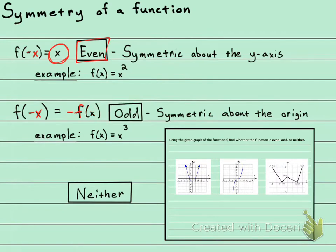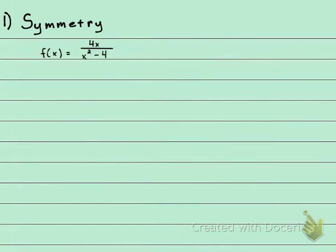Let's look at our example. We want to find the symmetry of this rational function. What I need to do is find the f of negative x. I'm gonna plug in a negative x everywhere where I saw an x. This was 4x over x² - 4. I'm gonna plug in a negative x on top and a negative x on the bottom.